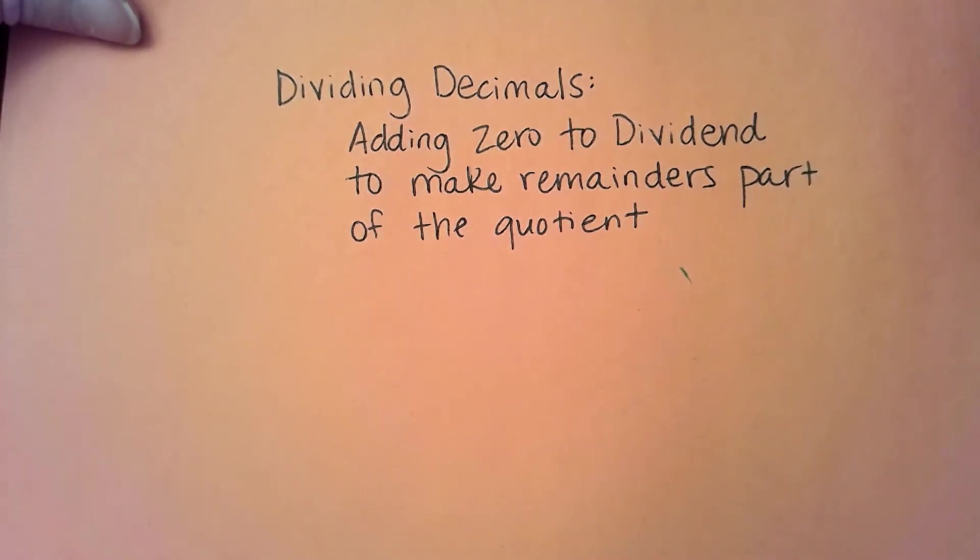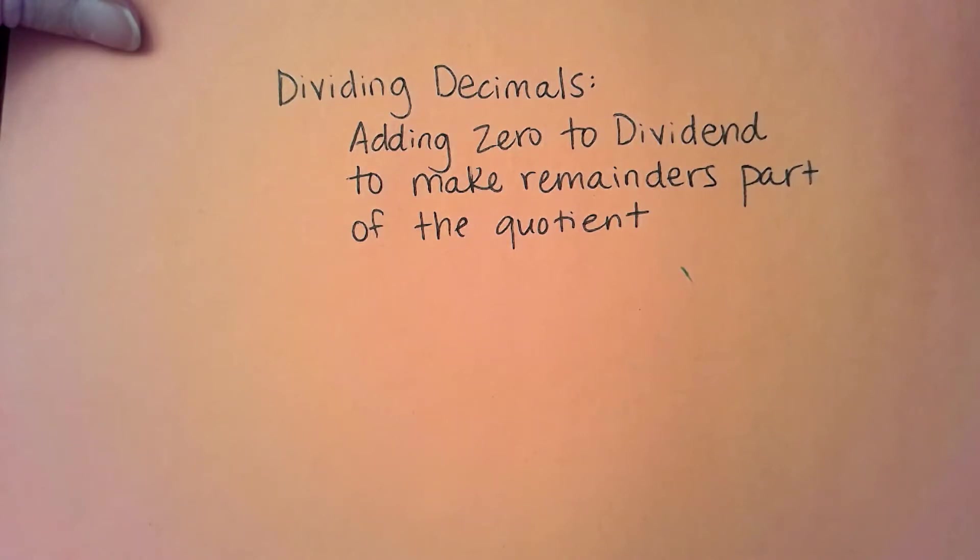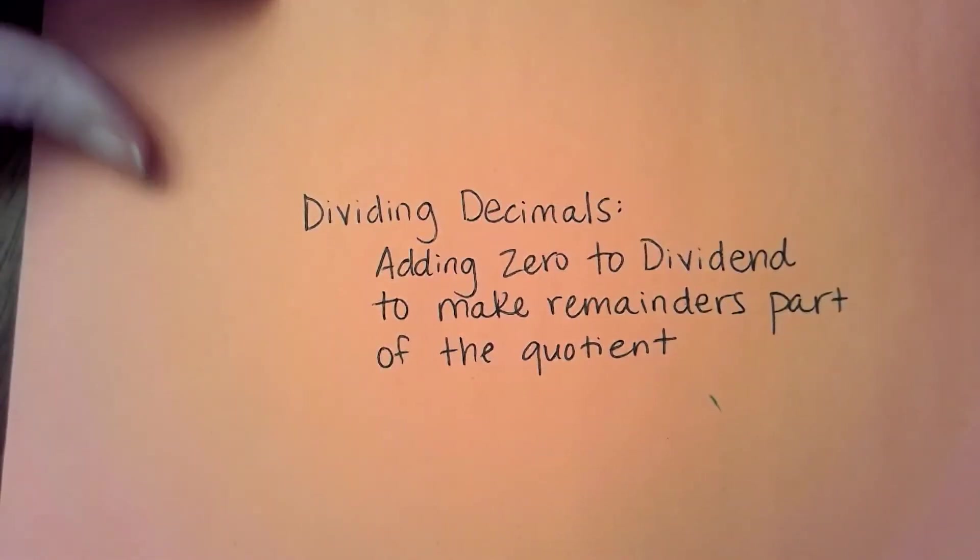When we talked about dividing whole numbers, one of our remainder interpretation types was to share the remainder. And this is one way that we can do that, to share the remainder when we can add zeros to the dividend.